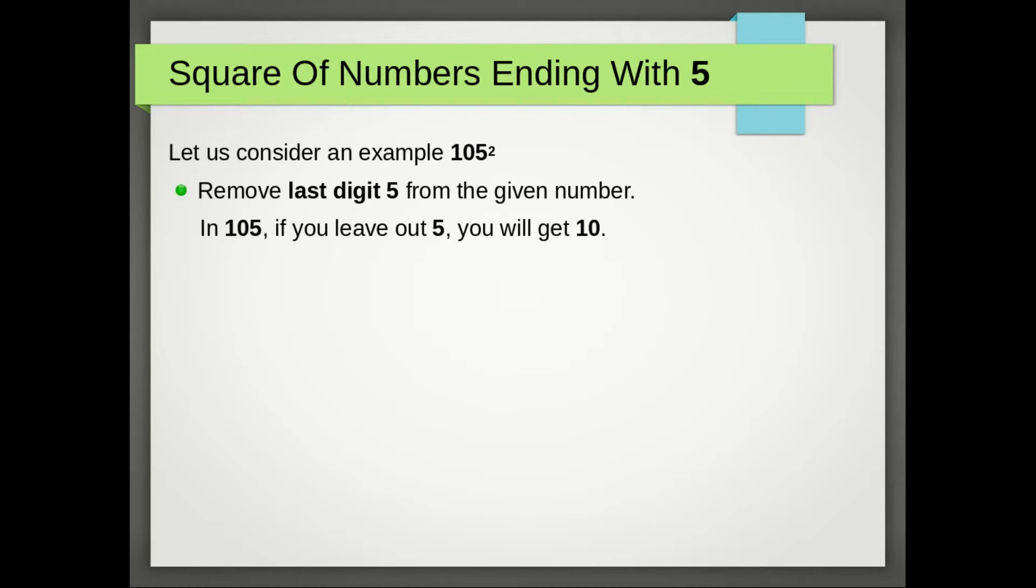In 105, if you leave out 5, you will get 10. Now multiply the number got in last step with its next number: 10 × 11 = 110.